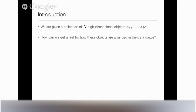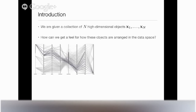The setting we consider is we're given a bunch of high-dimensional objects, called x1 to xn. We want to get a feel for what the underlying structure of this data is — are there certain clusters in there, what is the local structure of the data manifold formed by the high-dimensional inputs? The question is, how can we get an intuition for how this high-dimensional data is arranged in data space? If you look at the information visualization field, they've developed a lot of methods to do data visualization.